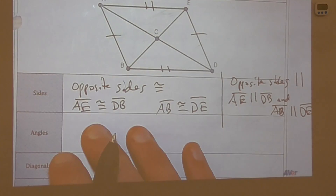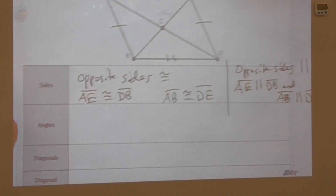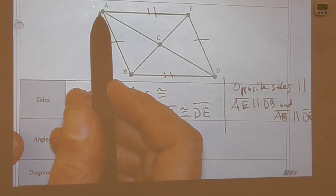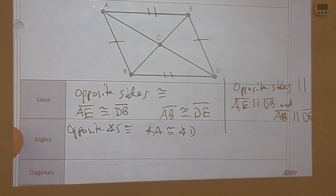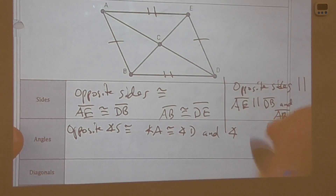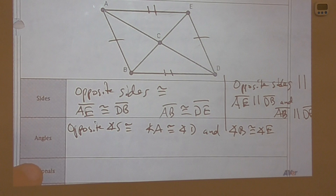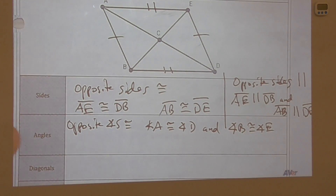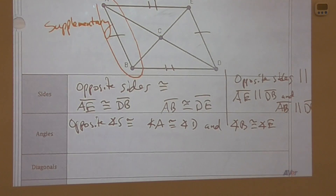For the angle relationships, we already marked those on this diagram. Opposite angles are congruent: angle A is congruent to angle D, and angle B is congruent to angle E. We also have angle relationships when angles are next to each other — angle A and angle B are supplementary.